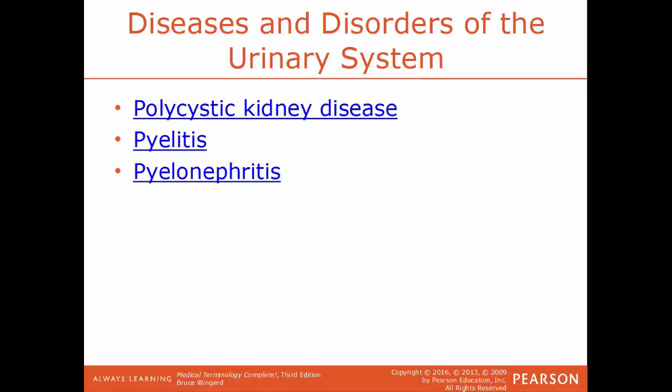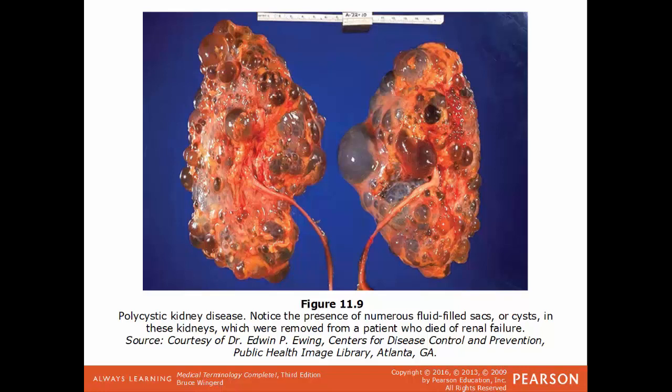Pyelonephritis is the inflammation of the renal pelvis due to a bacterial infection. Pyelitis is a reference to just the renal pelvis, but if you have inflammation of the pelvis and also the kidney, it's classified as pyelonephritis. In this image we have real examples of kidneys with polycystic kidney disease — you can easily see the large number of cysts that vary in size. These water-filled sacs impact the kidney's function.